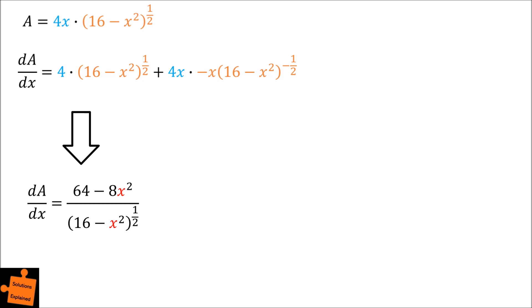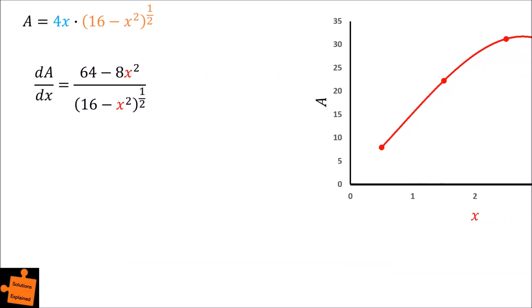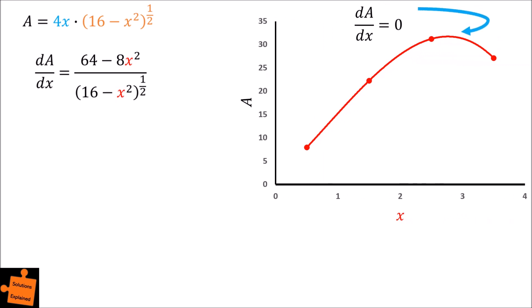Recall that at the maximum point, the gradient is equal to 0, and thus dA by dx is equal to 0. Therefore, we can set the gradient function as equal to 0, and then rearrange this to find the value of x which results in the maximum area.